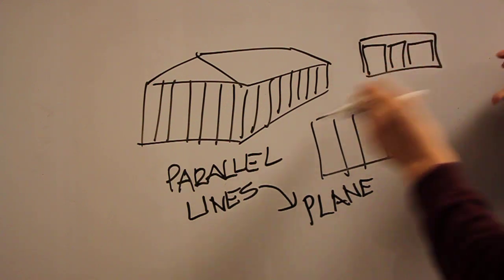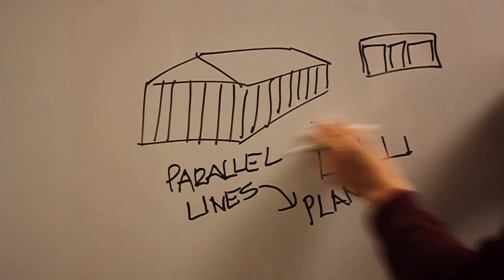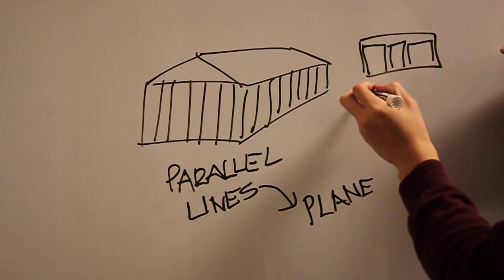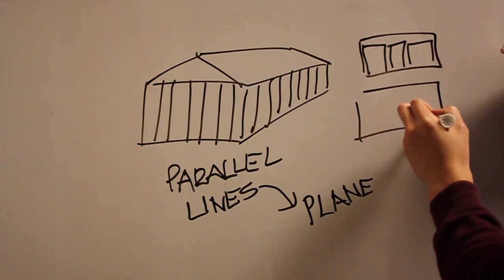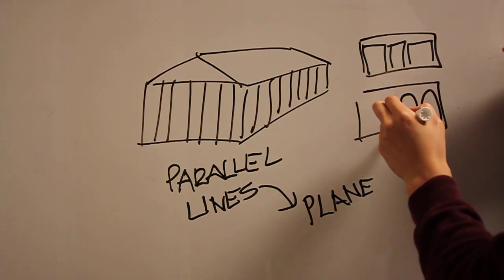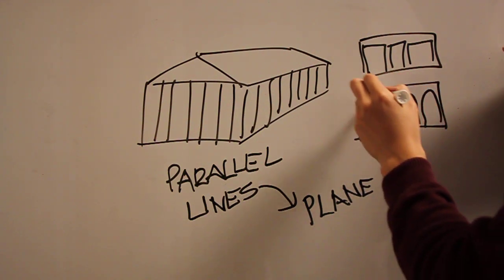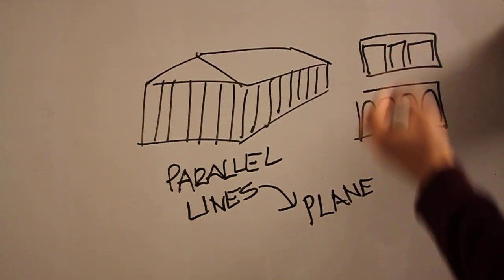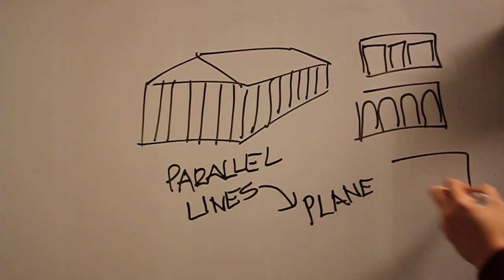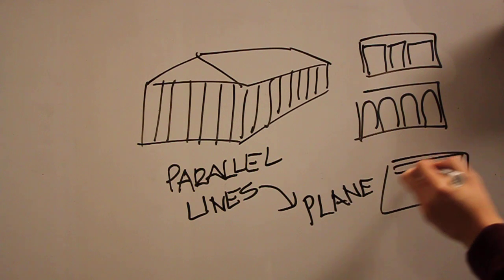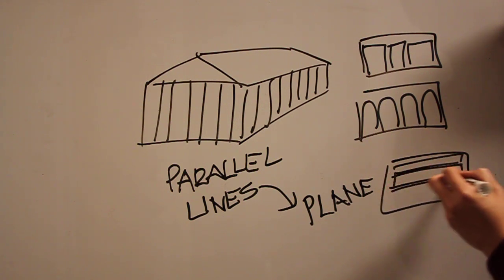That wall can be arches, which is essentially columns with curved tops. And you could even have slits — wood slits, for example. And what does that mean?